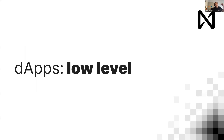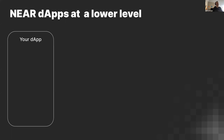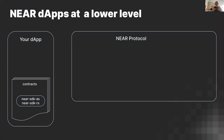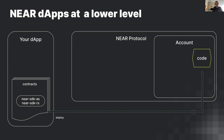Let's go a bit lower level — hold on to your seat because this is a pretty intense tour. You've got your application, you have an idea, and you write some contracts for it. That's what we're learning this week: how to write contracts in AssemblyScript and Rust using the software development kits — near-sdk-as for AssemblyScript and near-sdk-rs for Rust.